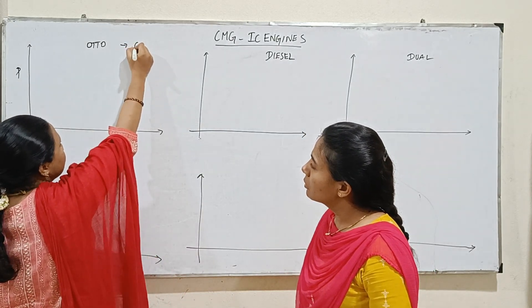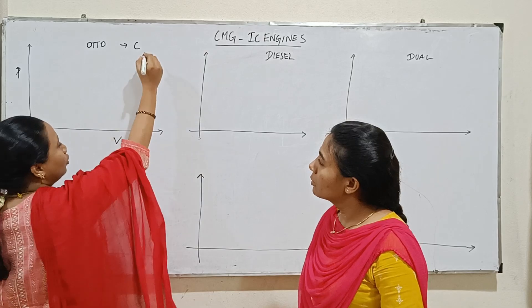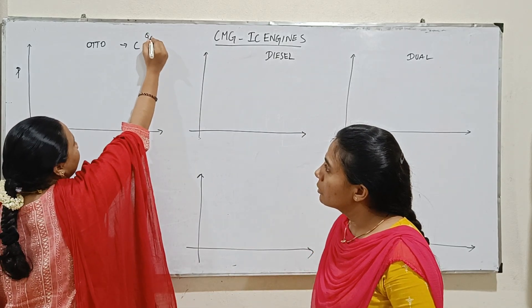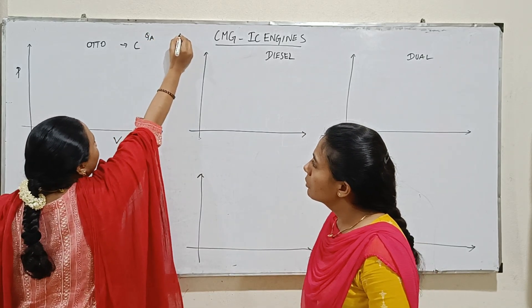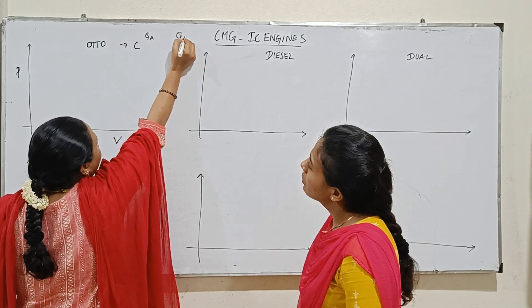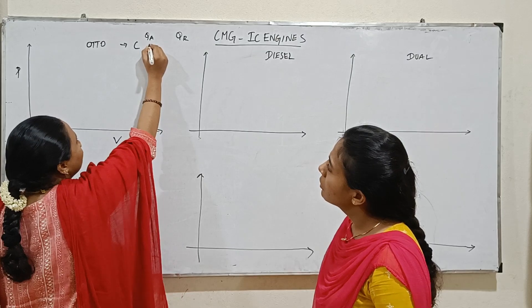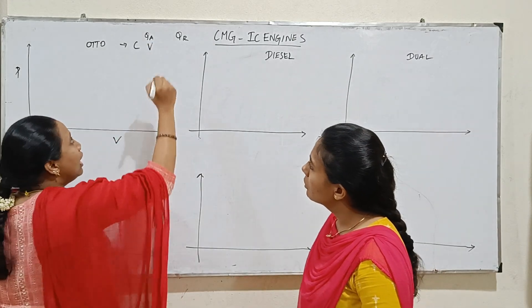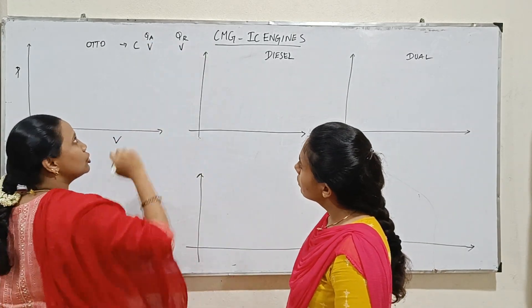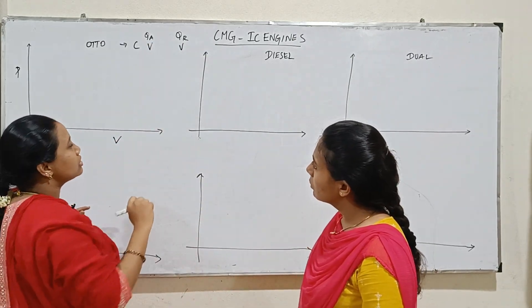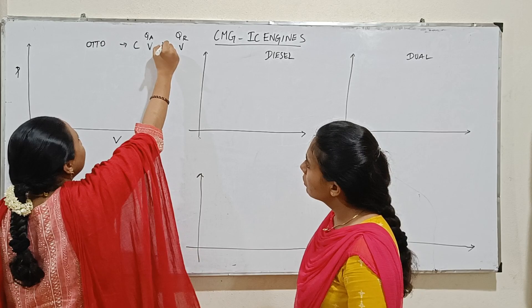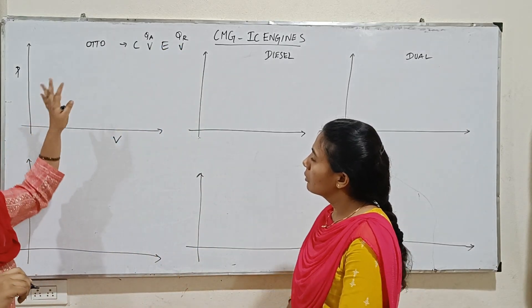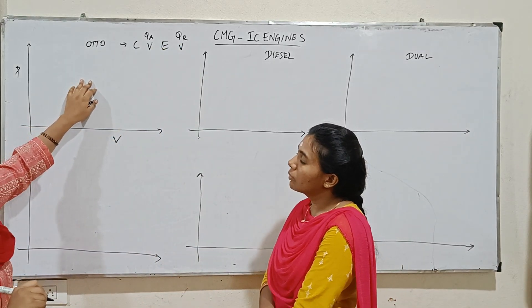The Otto cycle involves isentropic compression. The heat addition is constant volume heat addition. It is followed by isentropic expansion. This is the Otto cycle.